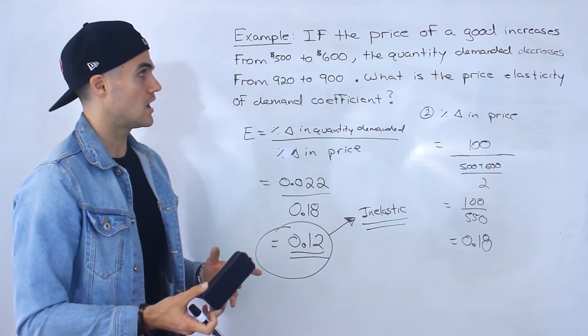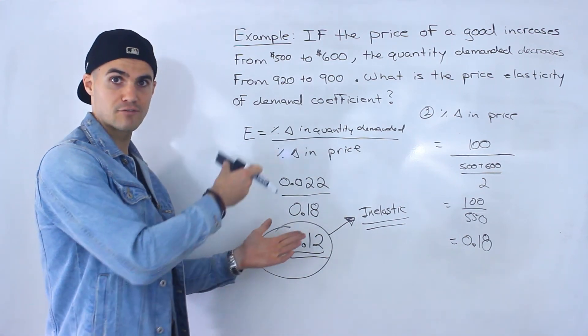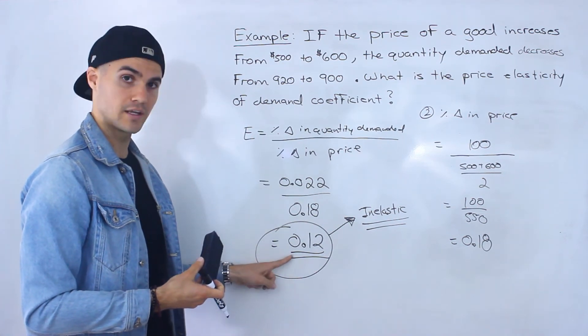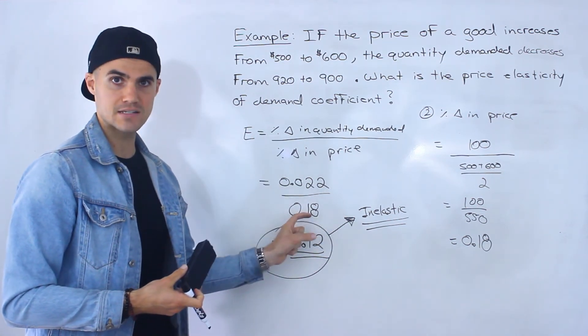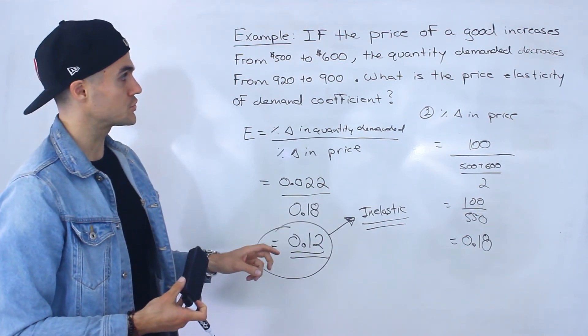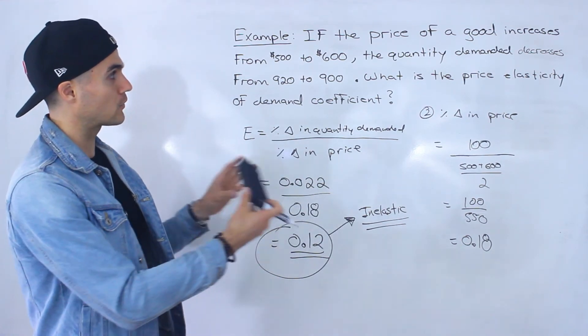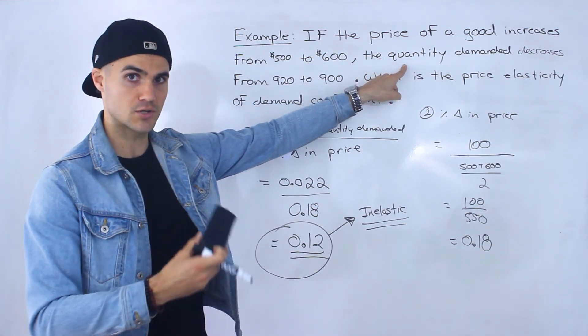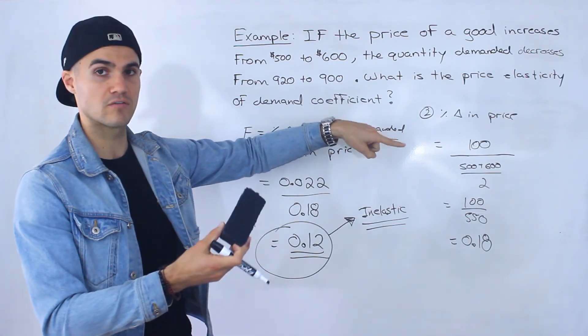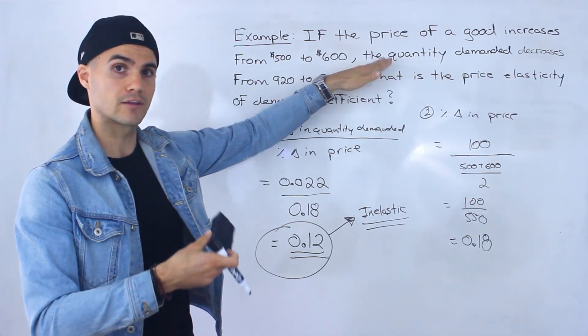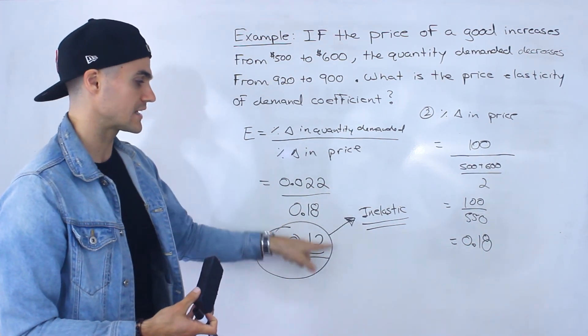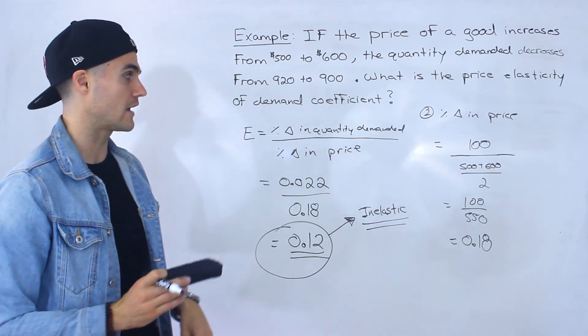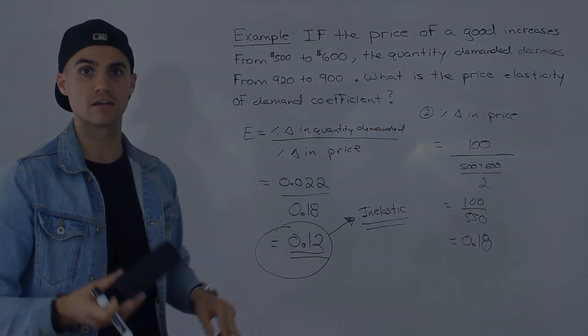So just two different examples of different classifications where you could have elastic or inelastic. Remember, if the numerator and denominator are the same, if you end up getting one here, then that good is unit elastic or unitary. And then we also showed how no matter which scenario we're dealing with, whether the price of the good is increasing and the quantity demanded is decreasing, or vice versa. In the previous example, the price decreased and the quantity increased, we're always going to get positive values for this coefficient. And it's because of that absolute value in both of these two respective formulas.